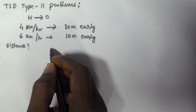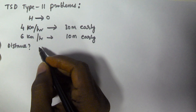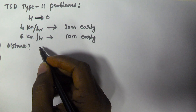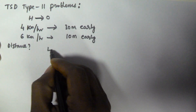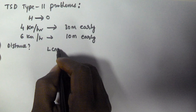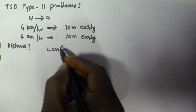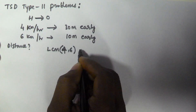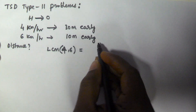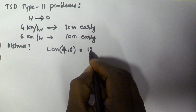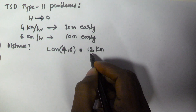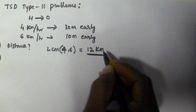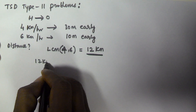In both cases the distance from home to office is constant, so I am taking that constant as the LCM of both speeds, which is the LCM of 4 and 6. That gives us 12 km. So let us assume the distance between his home and office is 12 km.